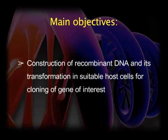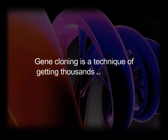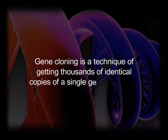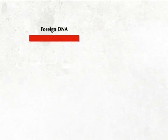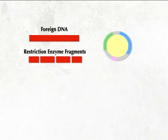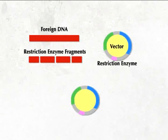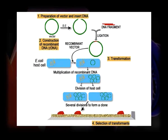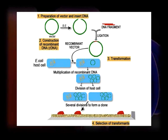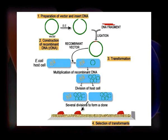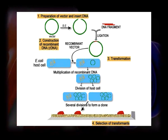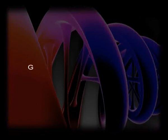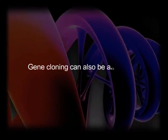Gene cloning is a technique of getting thousands of identical copies of a single gene of interest. For this purpose, the gene of interest is inserted into a vector molecule, which in turn is transformed into a host cell such as bacteria. The bacterial cell carrying the gene of interest is allowed to multiply on a suitable medium to get a colony of thousands of bacterial cells, each carrying the gene of interest. In this way we get thousands of copies of the same gene.